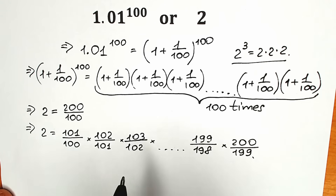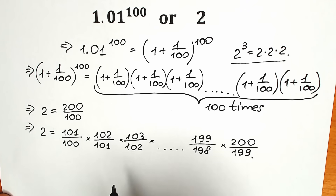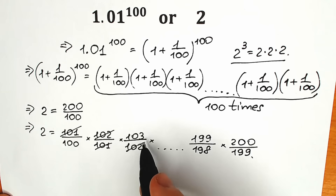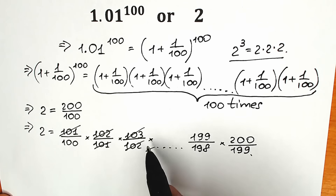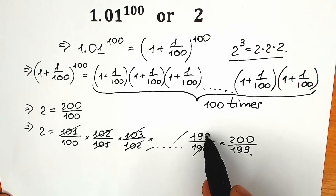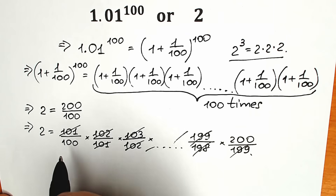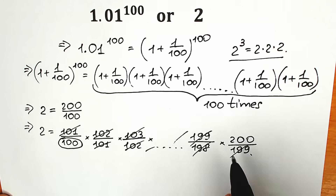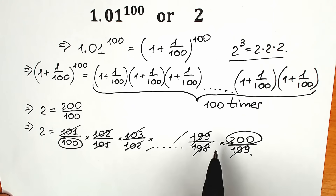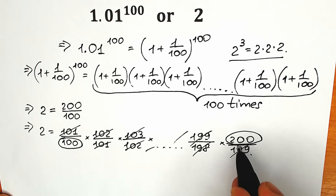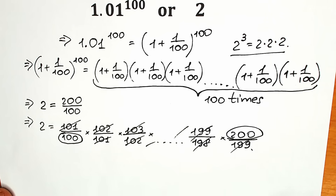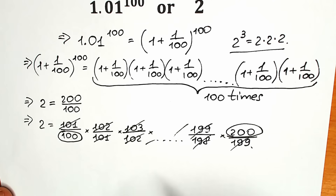If you look closely, we can cancel many elements here — 101 cancels with 101, 102 cancels with 102, 103, and so on, all the way up. We cancel 198 with the previous one and 199 with this one. We end up with 100 in the denominator and 200 in the numerator, giving 200/100 which equals 2. So this is a correct expression for 2.